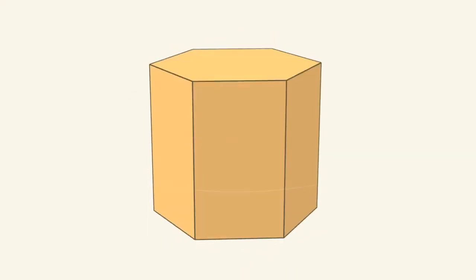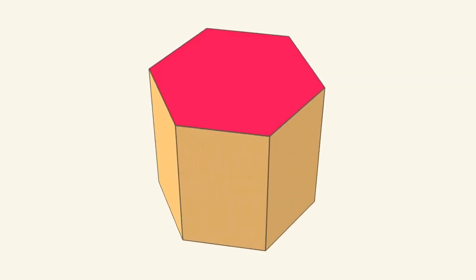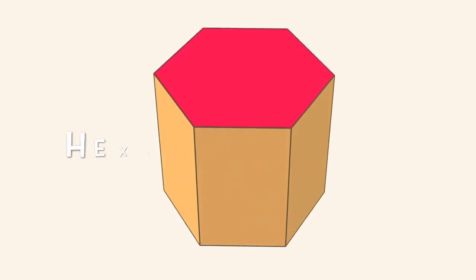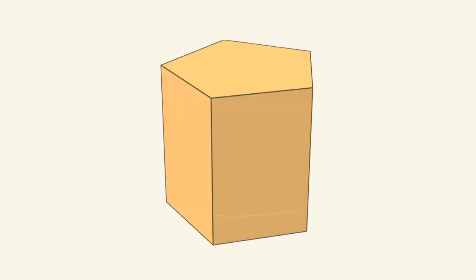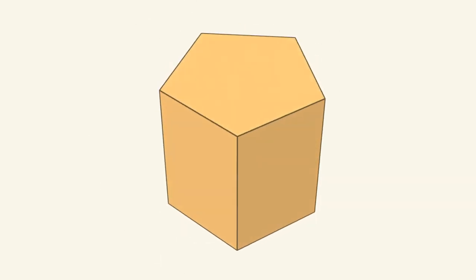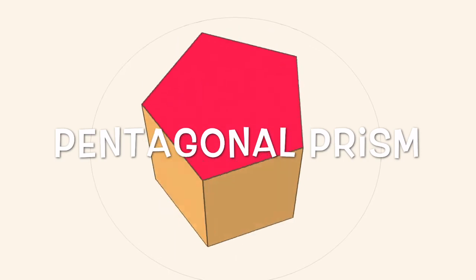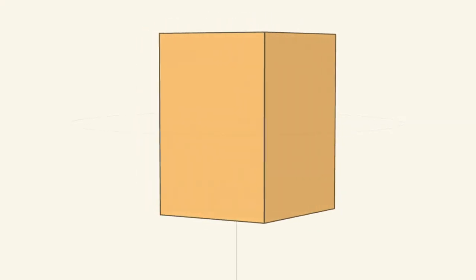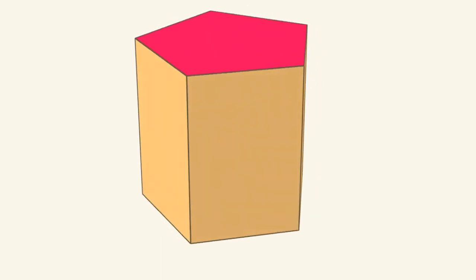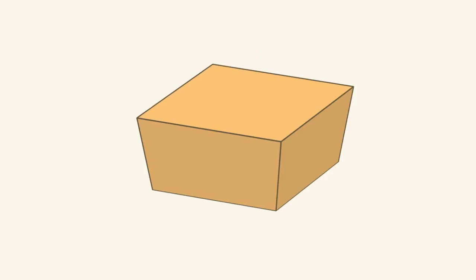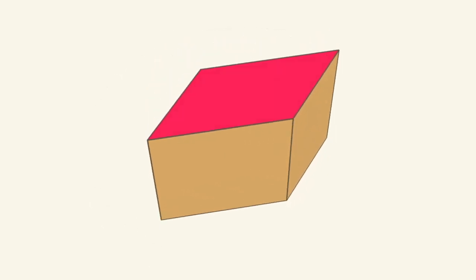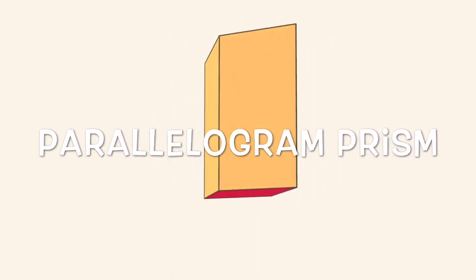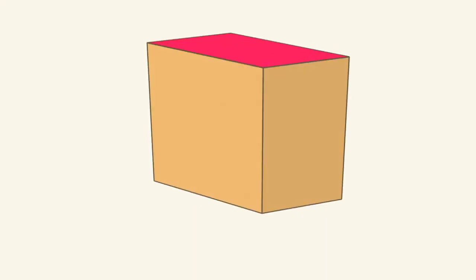Here's a prism with a hexagon as the base — two hexagon bases with all lateral faces as rectangles. This is a pentagonal prism with two pentagon bases and five lateral rectangle faces. And this one has two parallelogram bases, making it a parallelogram prism, with all lateral faces being rectangles.